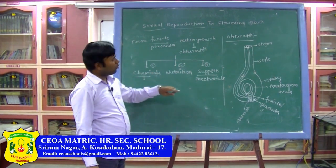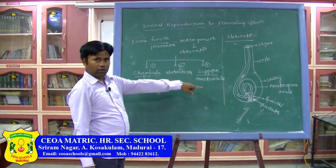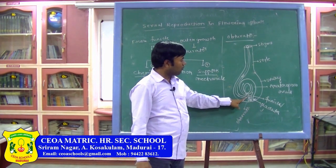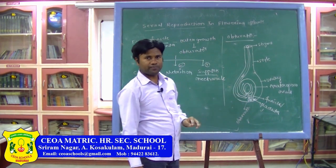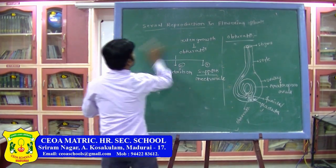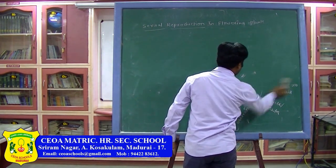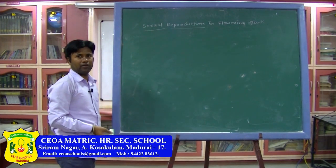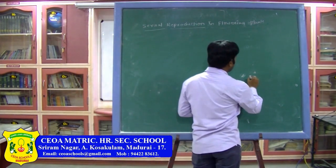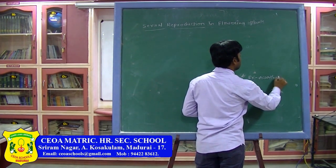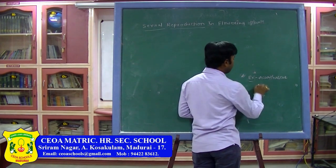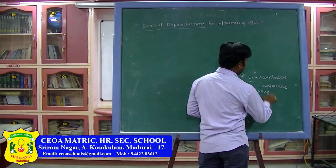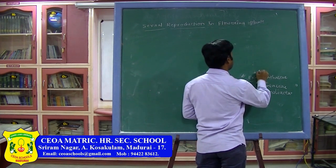The obturator is an outgrowth from the funicle or placenta that guides the pollen tube into the ovule. Examples of families with obturator: Acanthaceae, Lamiaceae, and Magnoliaceae.